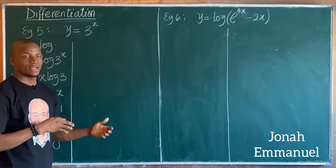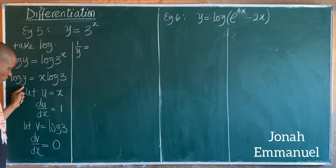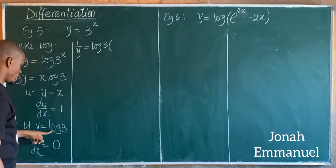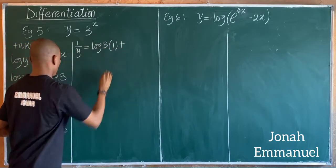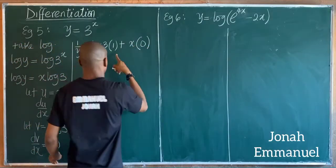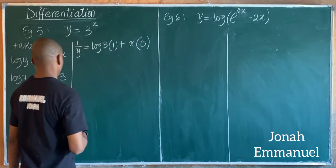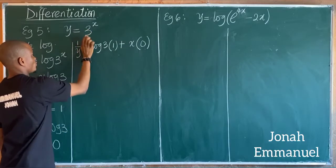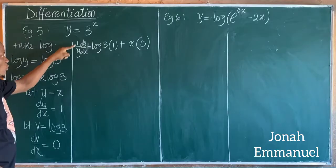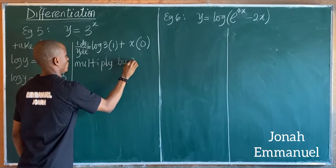Differentiating the left side using implicit differentiation gives one over y times dy/dx. The right side uses the product rule: v(du/dx) + u(dv/dx), which gives log 3 times one plus x times zero. So we have (1/y)(dy/dx) equal to log 3.